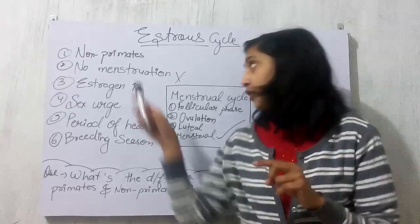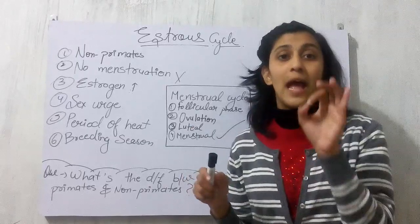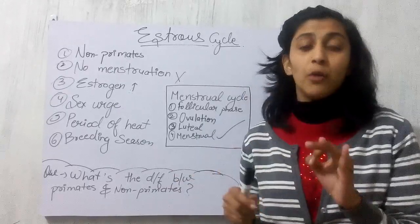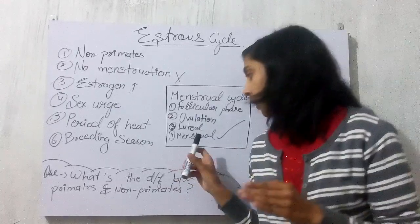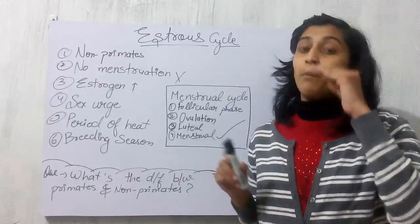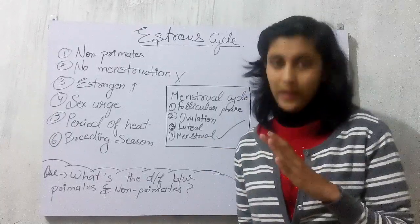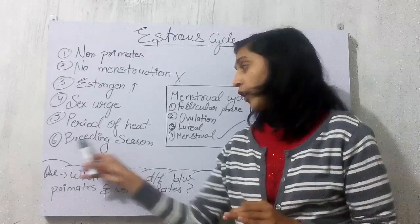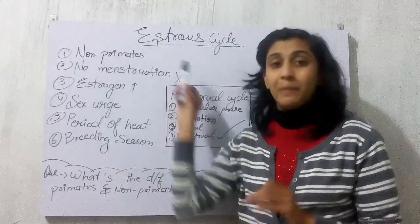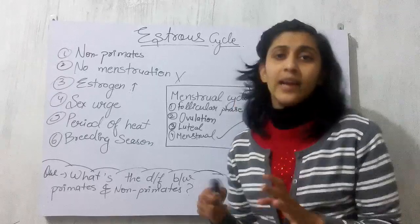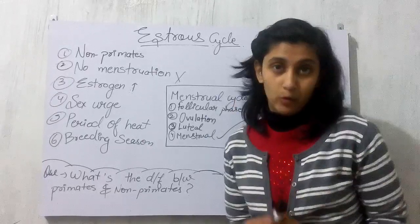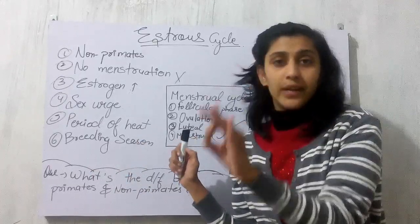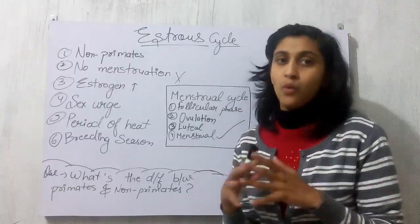Another most important difference between the two cycles concerns the endometrium. In the menstrual cycle, the endometrium — the inner layer of the uterus — will come out with the blood flow during menstruation, as seen in primates including humans. But in the estrous cycle of non-primates, such as cows and buffaloes, the endometrium will never come out. There is no menstrual bleeding, and it only happens during the breeding season.